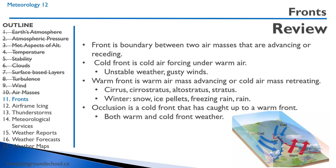A front is the boundary between two air masses that are advancing or receding. A cold front is cold air forcing itself under warm air — it's associated with unstable weather and gusty winds. A warm front is a warm air mass advancing or a cold air mass retreating, with associated clouds including cirrus, cirrostratus, altostratus, and stratus. In winter we can get warm fronts bringing snow, ice pellets, freezing rain, and then rain. An occlusion is a cold front that has caught up to a warm front, resulting in both warm front and cold front weather.